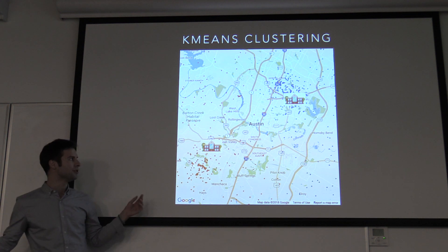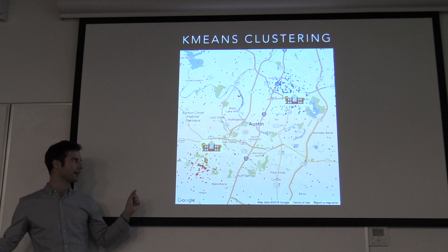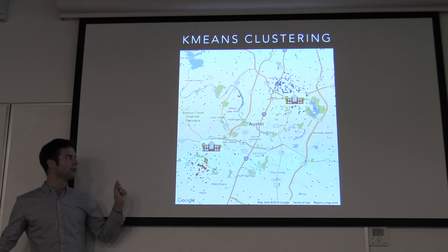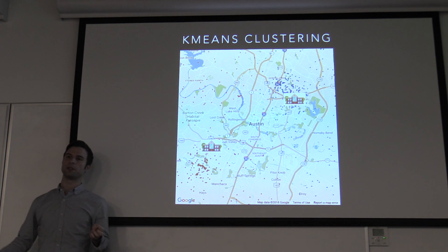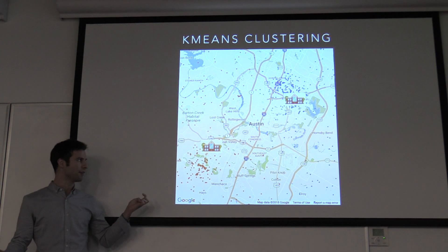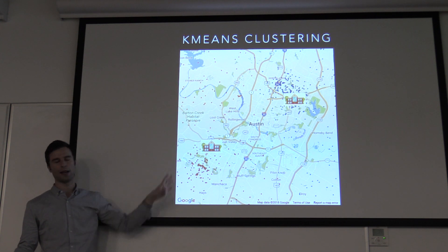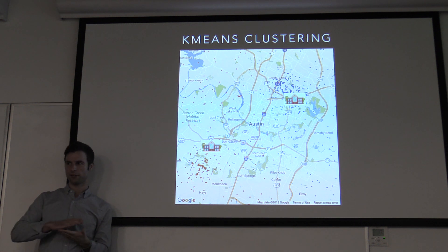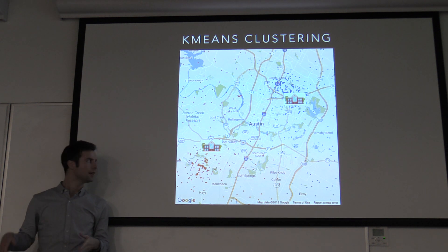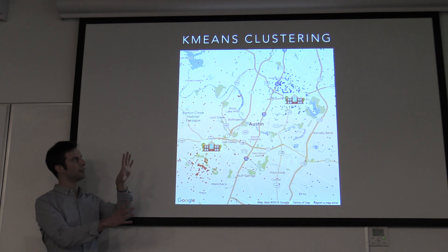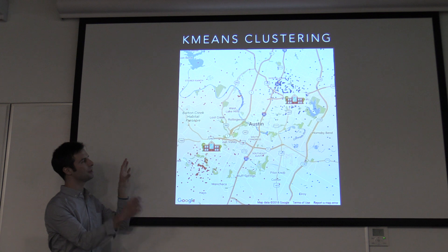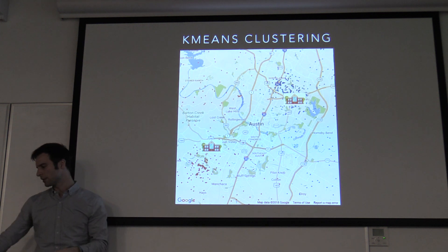Furthermore, we can also think of these centroids as future locations to build ambulance stations. If we have projected data for where incidents are going to happen — say through year 2025 — then we can say the trend is moving in a certain direction, and build our ambulance stations accordingly.